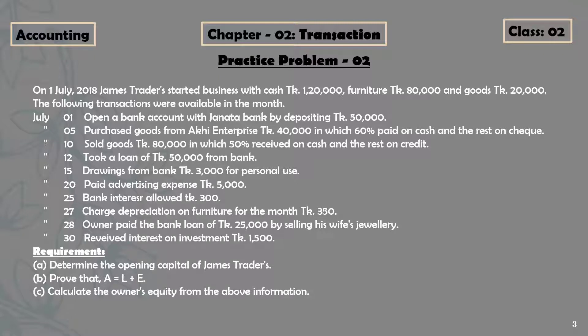This is a full creative question, just like an actual question paper. There are three requirements: A — determine the opening capital of James Traders; B — prove that A equals L plus E, which is about creating a tabular format of the effects of the accounting equation; and C — calculate the owner's equity from the above information.